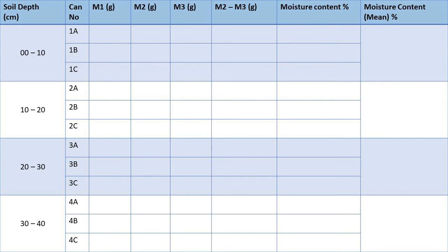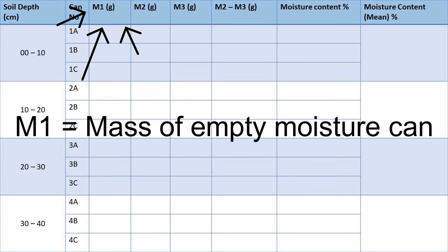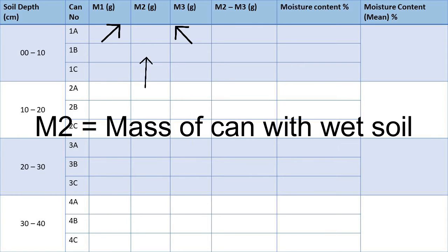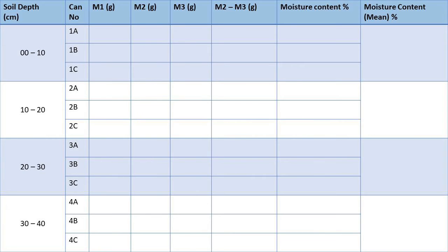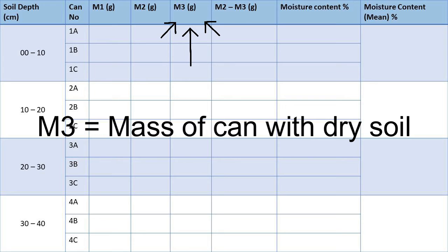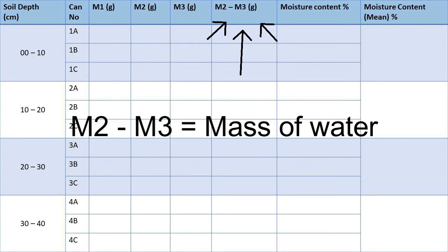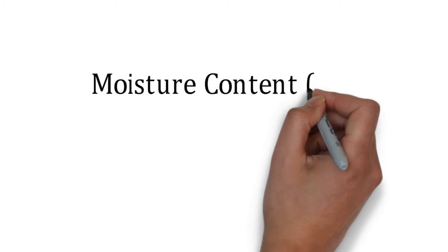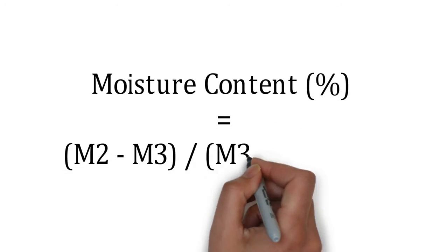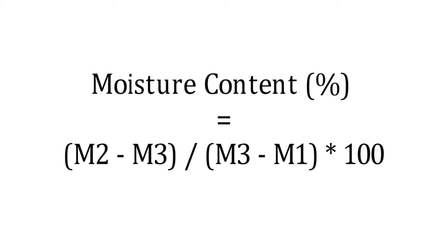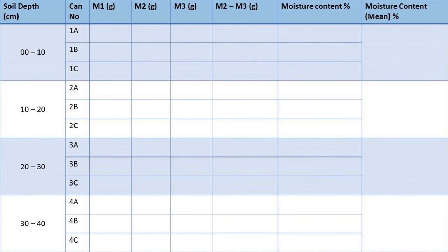This is the way to record data to calculate moisture content at different soil depths. M1 is the mass of the empty moisture can, M2 is the mass of the can with wet soil, and M3 is the mass of the can with dry soil. The difference between M2 and M3 is the mass of water. Moisture content is calculated by dividing (M2 − M3) by (M3 − M1), multiplied by 100 for each sample. Finally, the moisture content at each depth is calculated by obtaining the mean of the replicate values.